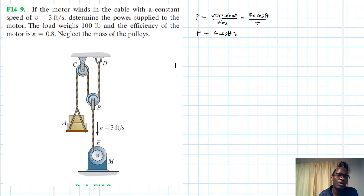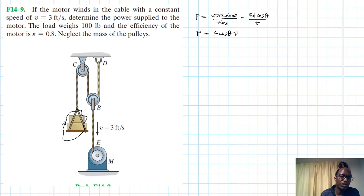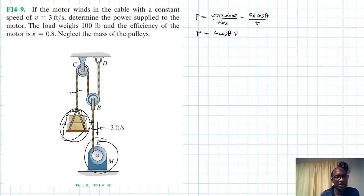We have been asked to determine the power supplied to the motor. What we need to do is calculate the power output and then, using the efficiency formula, calculate the power input. We can calculate the power output by either using the load object directly and determining the force in the cable, or using the motor and determining the force in the cable from that perspective.